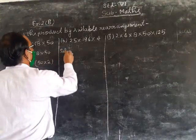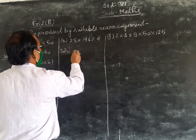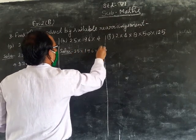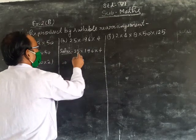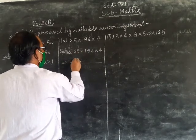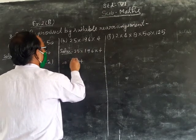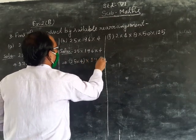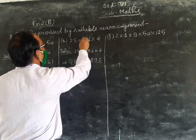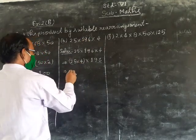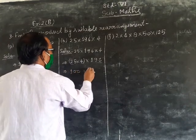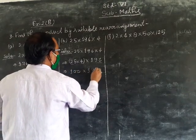Part number B: solve 25 multiply by 196 multiply by 4. So this becomes 25 multiply by 4 multiply by 196, which equals 100 multiply by 196.